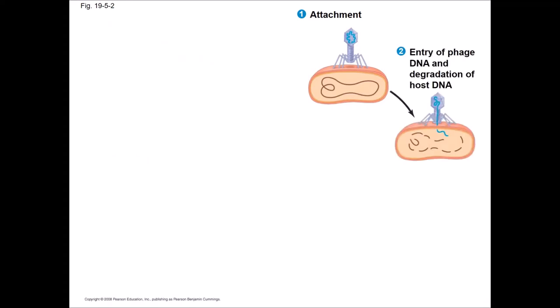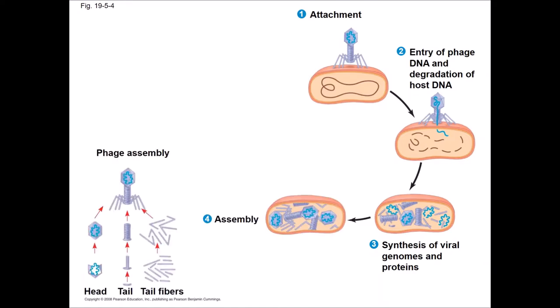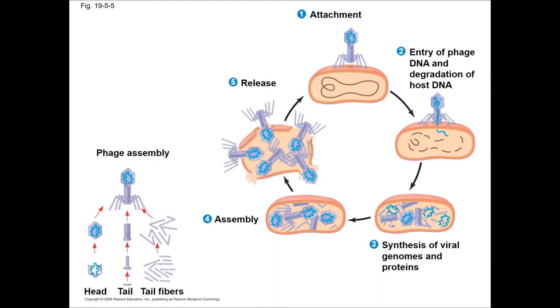In the lytic cycle, the virus attaches to the cell and injects its DNA. This DNA encodes proteins which degrade the host DNA. The rest of the viral genome gets synthesized, as well as its proteins. The phage assembles in the cell — each phage has a head filled with DNA, an injector tail, and tail fibers that stick to a bacterial cell surface. After assembly, the phages lyse the host cell and escape into the environment.